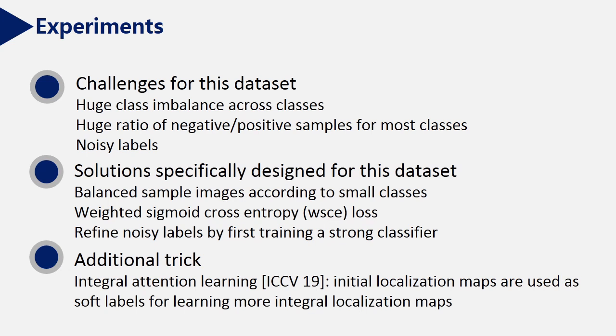We develop solutions specifically for those problems. For example, we sample images in a balanced way according to the small classes. Also, weighted sigmoid cross entropy loss is used, and the probabilities of positive samples for classes are used as weights. For noisy label problem, we refine the labels for training set by first training a strong classifier. Besides, an additional trick is used in our approach. Integral attention learning from ICCV 19 is adapted.